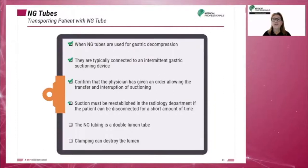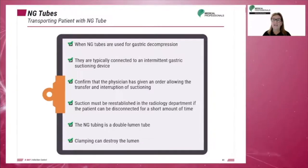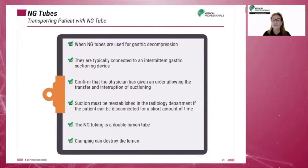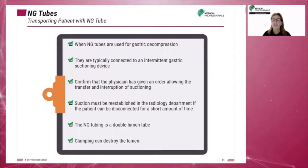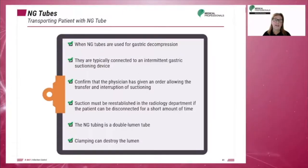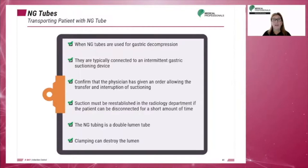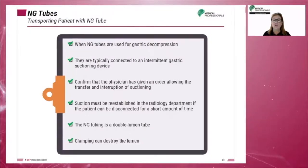When NG tubes are used for gastric decompression, they are typically connected to an intermittent gastric suctioning device. Always confirm that the physician has given an order allowing the transfer and interruption of suctioning. Suction must be re-established in the radiology department if the patient can be disconnected for a short amount of time. The NG tubing is a double lumen tube; therefore, clamping of the tubing is not recommended, as clamping can destroy the lumen.